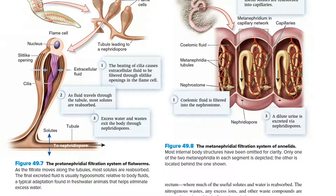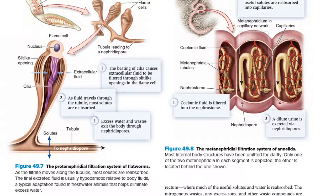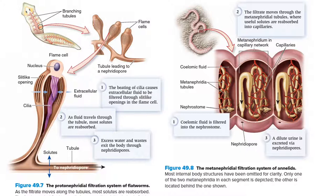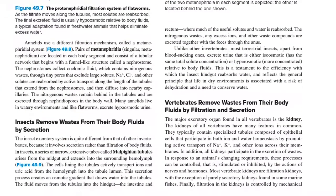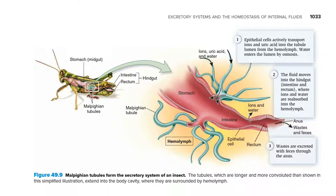Looking at the protonephridial filtration system of flatworms step by step, and on the right-hand side the metanephridia filtration system of annelids, and the Malpighian tubules excretory system of insects — each can be understood step by step through the figures.